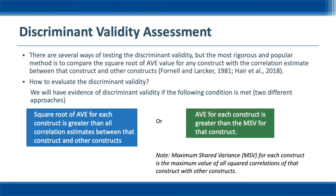The next step is to test discriminant validity. Discriminant validity refers to the extent to which constructs are distinct. That means discriminant validity provides empirical evidence that a construct is unique and captures phenomena that other constructs do not. In this video, we will use the most popular method proposed by Fornell and Larcker in 1981. Essentially, this method compares the AVE for each construct with the squared variance between that construct and other constructs. There are two ways to make this comparison. The first way is to compare the square root of AVE for each construct with all correlation estimates between that construct and other constructs. If the square root of AVE is greater than all those correlation estimates, then we have evidence of discriminant validity.